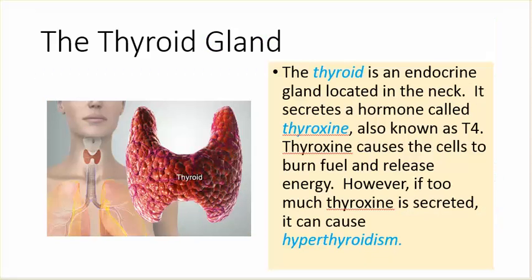The thyroid gland. The thyroid is an endocrine gland located in the neck. It secretes a hormone called thyroxine, also known as T4. Thyroxine causes the cells to burn fuel and release energy. However, if too much thyroxine is secreted, it can cause hyperthyroidism.